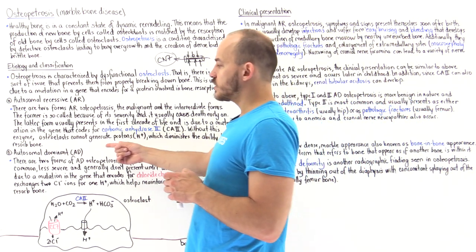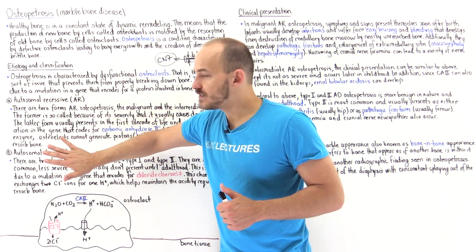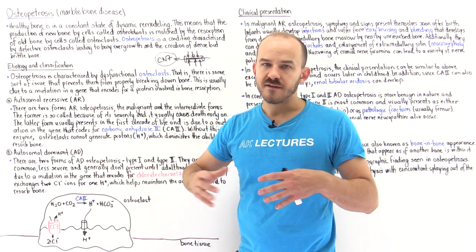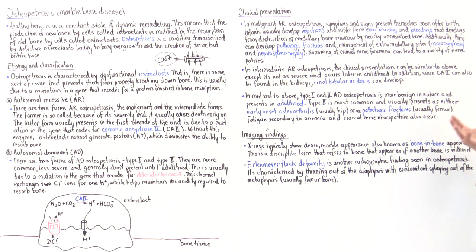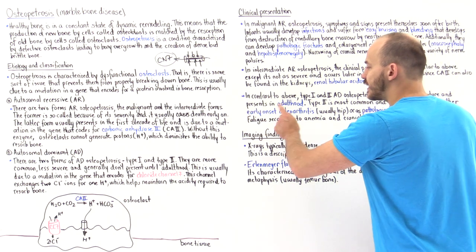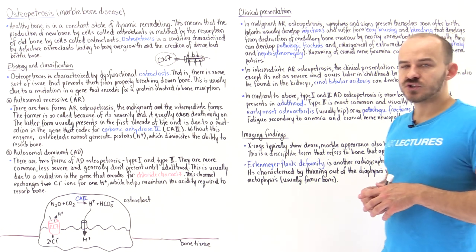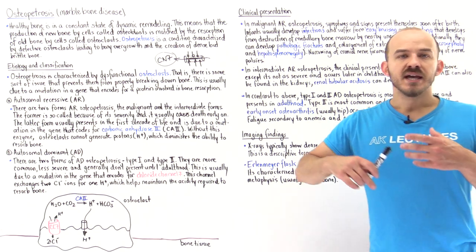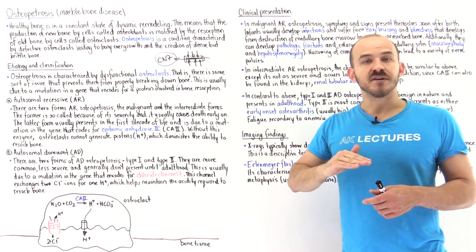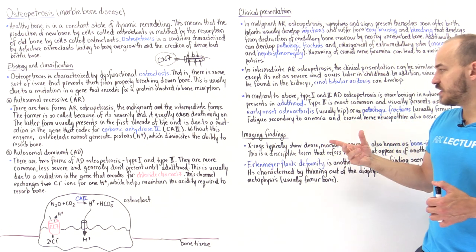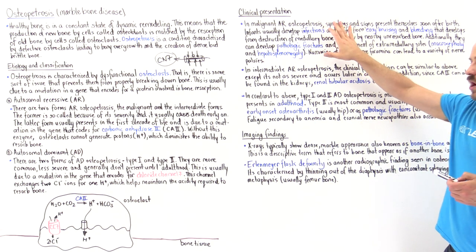In the autosomal dominant form of osteopetrosis, this is much more common and not as severe. Typically in childhood there are no symptoms or signs, and generally signs and symptoms only develop in adulthood. Most commonly, patients present with either early-onset osteoarthritis — typically affecting the hip joints — or pathologic fractures, typically affecting the femur. Additionally, we can see fatigue due to anemia from inability to form red blood cells and hemoglobin, and cranial nerve neuropathies and palsies for the same reasons discussed earlier.